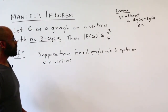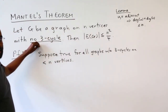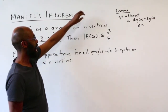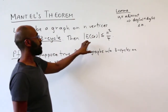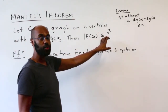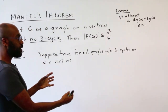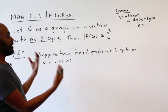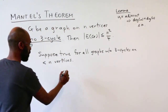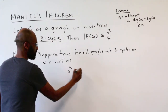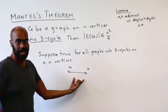For our inductive argument, suppose the theorem is true for any graph on fewer than n vertices with no three-cycle. That means if you have a graph on m vertices, where m is less than n, with no three-cycle, then the number of edges in that graph is at most m squared over four. To invoke induction, we'll peel off any pair of adjacent vertices. So our picture has a vertex u, a vertex v, and we pick u and v to be adjacent.